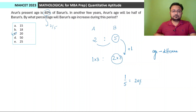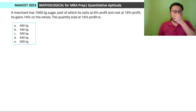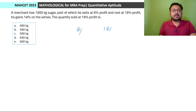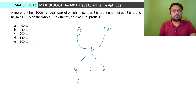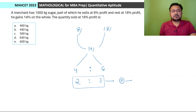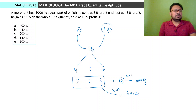Next question: A merchant has 1000 kilograms of sugar, part of which he sells at 8 percent profit and the rest at 18 percent profit; overall profit is 14 percent. Total quantity sold at 18 percent profit? Simple case of alligation: 14−8 = 6, and 18−14 = 4, so the ratio is 4:6 = 2:3. Total is 5 units = 1000 kg, so 1 unit = 200 kg. The 18 percent part is 3 units = 600 kg. Option E.